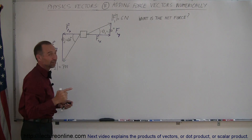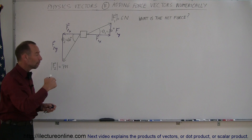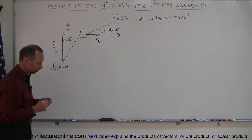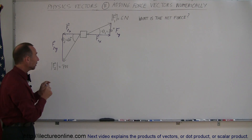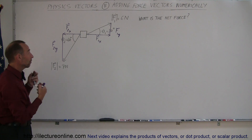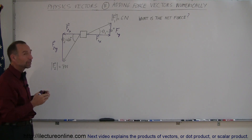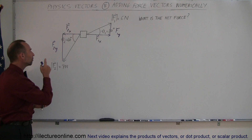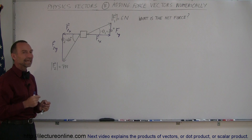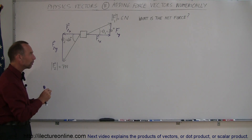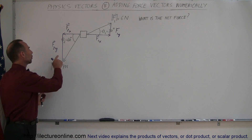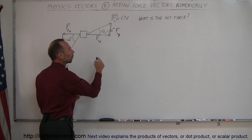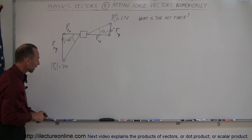Notice that the Y component of the second vector is pointing downward, so that would be in a negative direction. The magnitude of the Y component is a positive number because the magnitude of any vector is always positive. But since it's pointing in the negative direction, when we add the Y components together, we'll have to subtract this component from the other — at least the magnitude of that component.